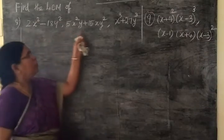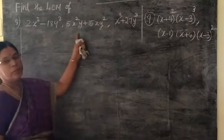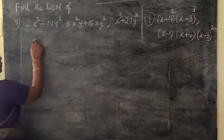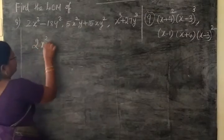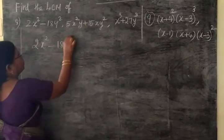Find the LCM of the following. Now LC is ready. 2x square minus 18y square.